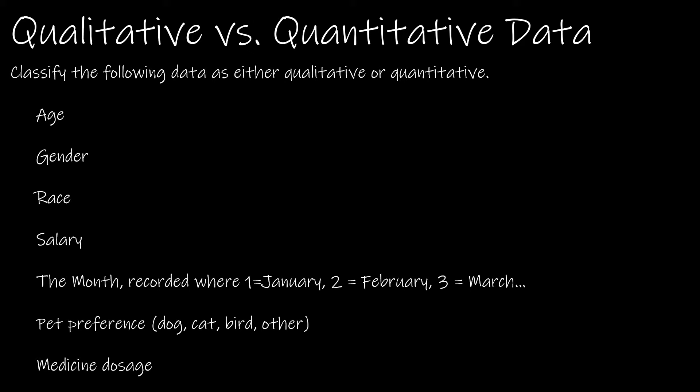Let's take a look at a couple of examples to make sure we understand the difference between qualitative and quantitative. I'm going to denote qualitative with 1 and quantitative with 2, since they both start with Q. Age is a number — and is it a number we would find value in finding statistics of? Yes. It is quantitative because it would make sense to analyze the average age. Gender is not a number, which makes it easy to determine that it is qualitative — it's just a category you belong to.